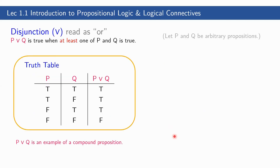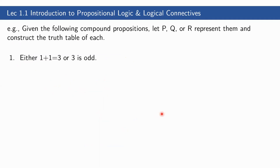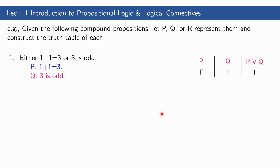Next is the disjunction, read as 'or.' P or Q is true when at least one of P and Q is true. If both are false, then P or Q is also false. Example: 'Either 1 plus 1 is equal to 3, or 3 is odd.' P: '1 plus 1 is equal to 3.' Q: '3 is odd.' P is false, Q is true, so P or Q is true — because at least one of P or Q must be true.